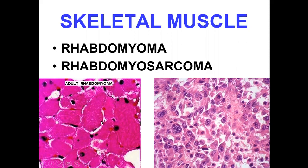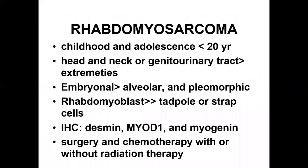Adult rhabdomyoma consists of benign skeletal muscle fibers. Rhabdomyoma may also occur in the heart, as there are striated muscles there. Rhabdomyosarcoma is of different types: one is embryonal, another is alveolar, and another is pleomorphic.